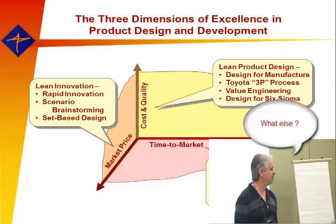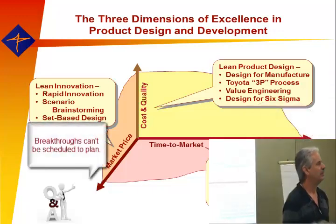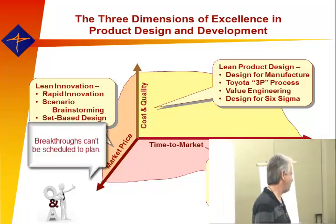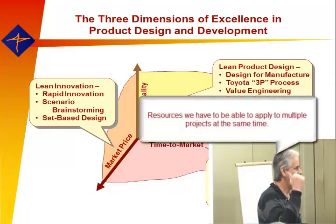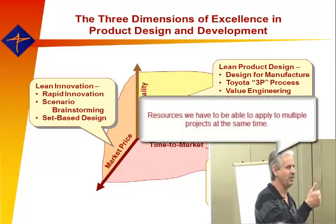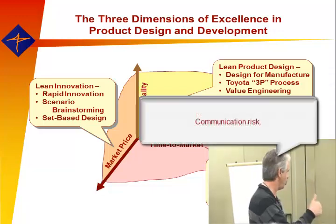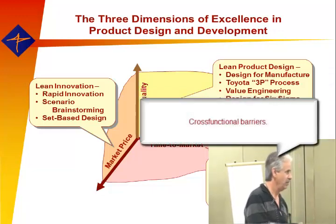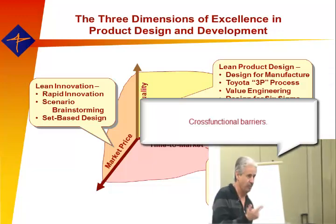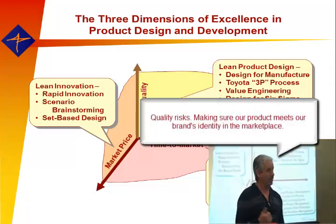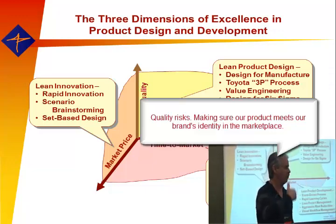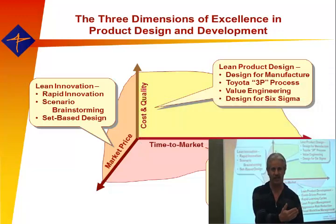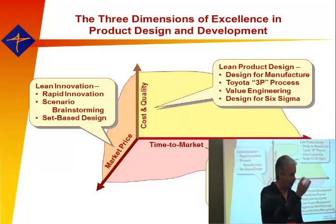Great theories can't be scheduled for planning — it's kind of like inventing on demand, and it's not so easy. We have resources that we have to apply to multiple projects at the same time that are shared. There's always communication risk, cross-functional barriers even among people within the same function. Quality risks — making sure that our product meets our brand's identity and reinforces our brand in the marketplace. There's an awful lot riding on product development, and all of that can be wrapped up in risks and uncertainties.